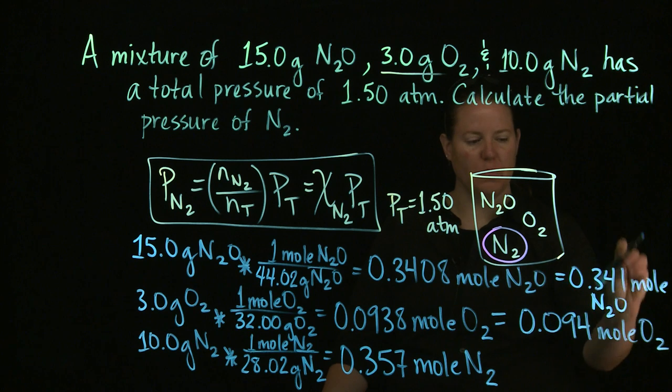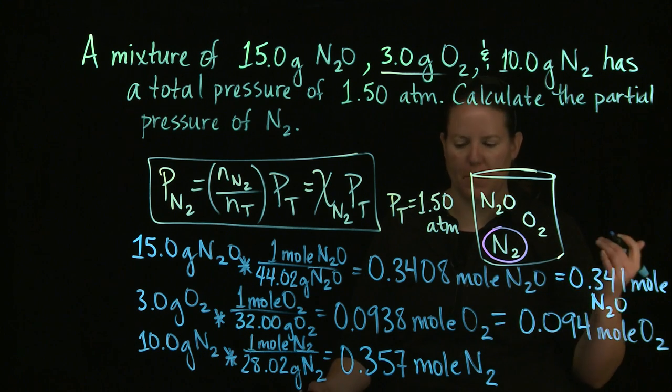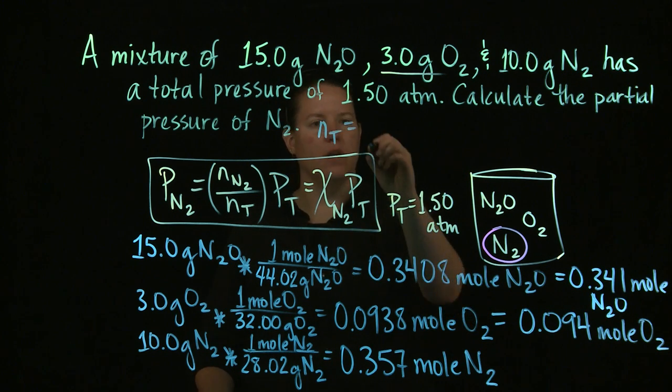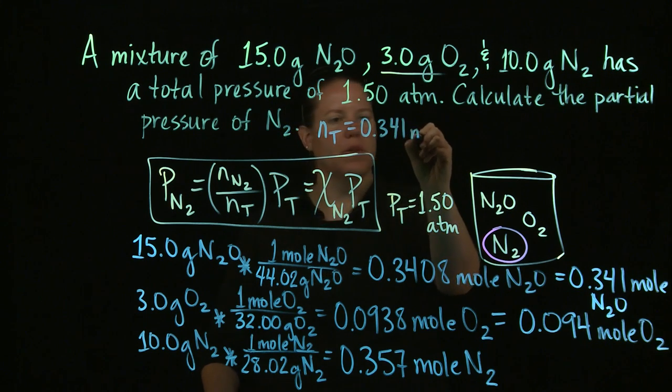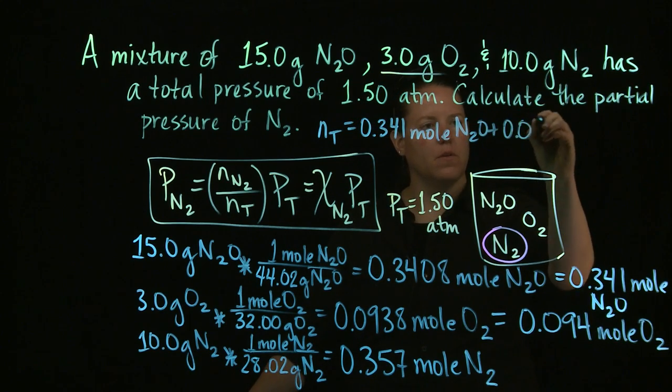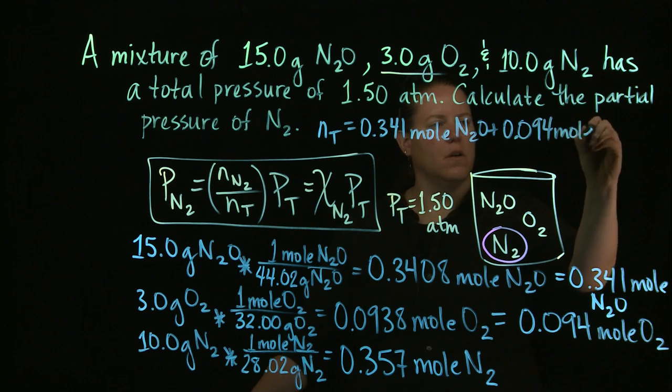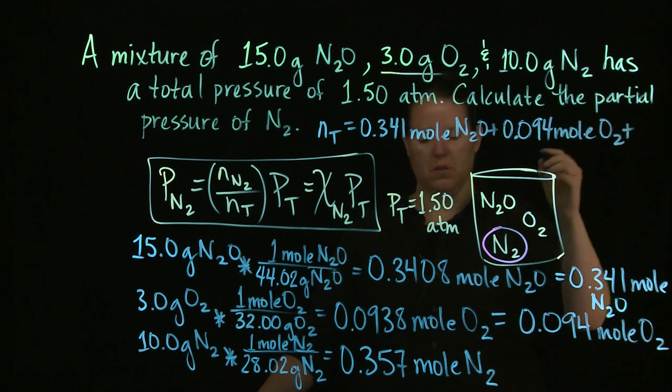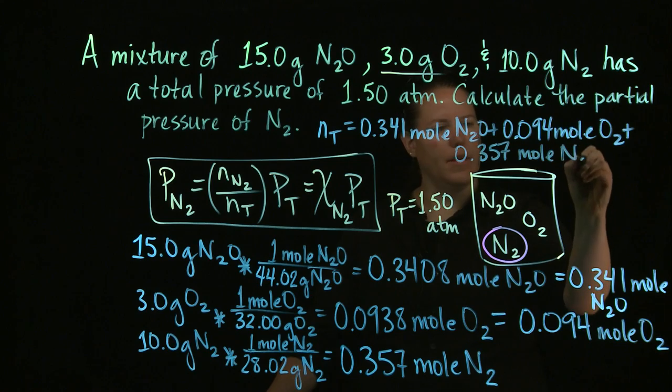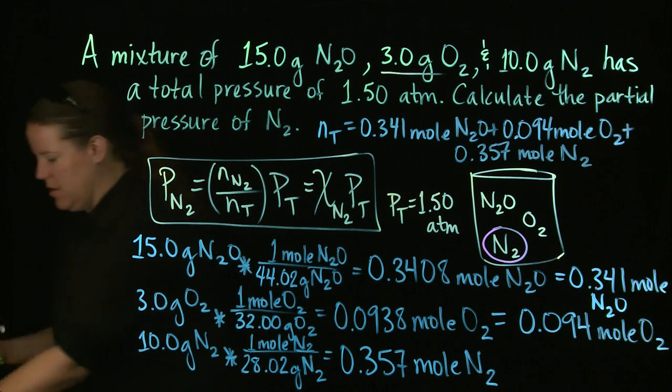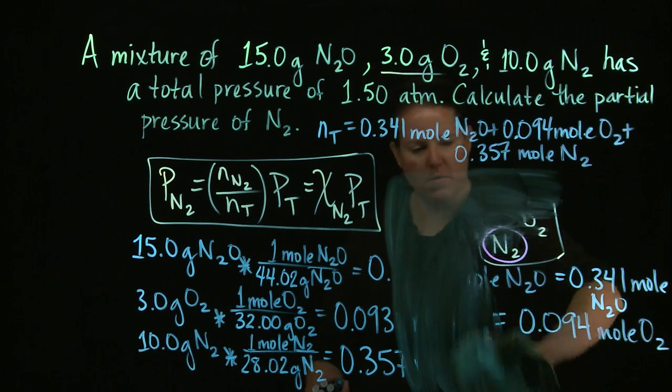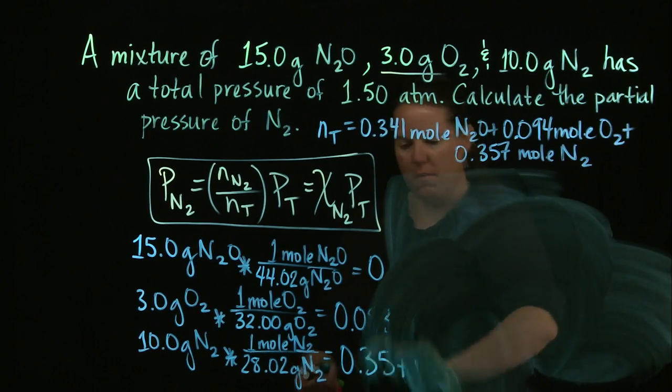Okay, so in terms of this, we need not only the individual moles of N2, but notice I calculated the moles of everything. That probably means that they're important. So I need the overall number of moles total as well. So I need to add these together. I'm going to erase some of this because we're done with it.